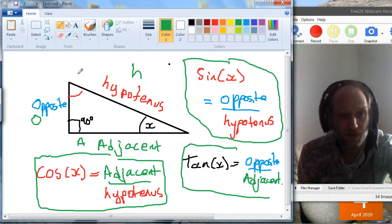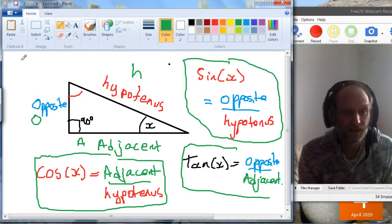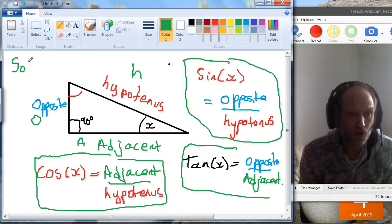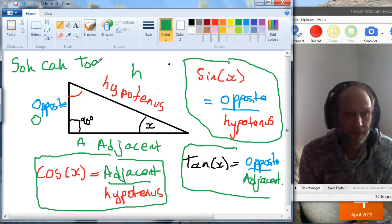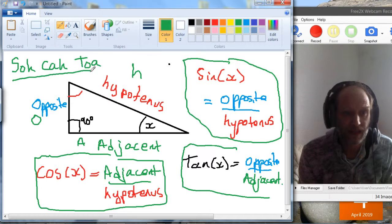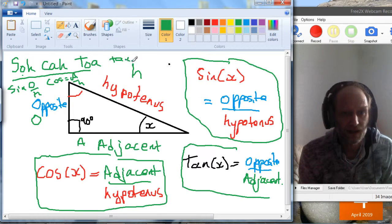Then the formula, the way I remember them, is SOH CAH TOA. And from remembering that I can always remember it's sine is opposite over hypotenuse, cos is adjacent over hypotenuse, and tan is opposite over adjacent.